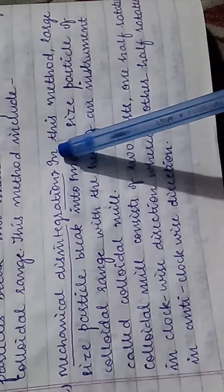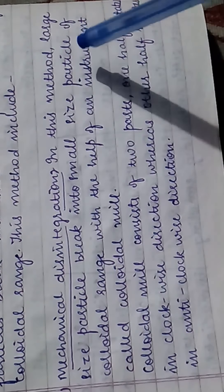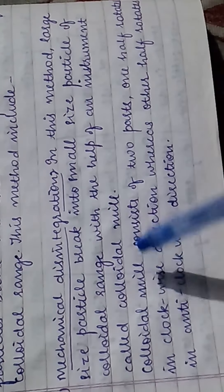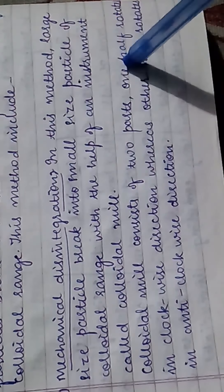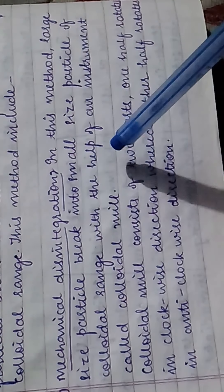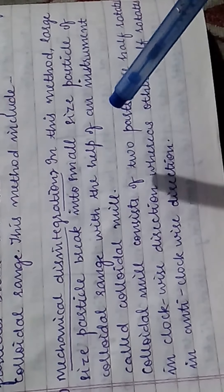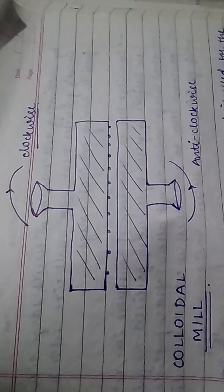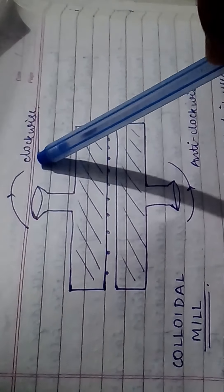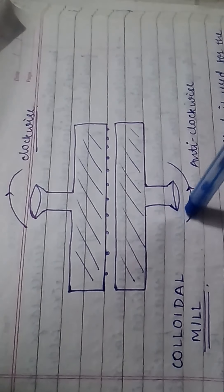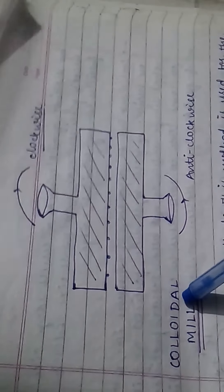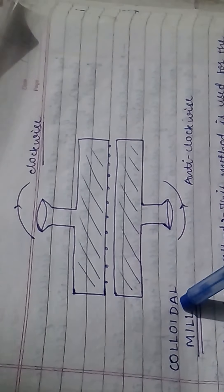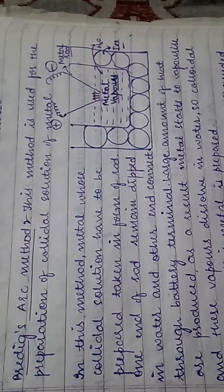First, we have mechanical disintegration. In this method, large-size particles break into small particles with the help of an instrument called a colloidal mill. The colloidal mill has two parts: one rotates in a clockwise direction and the other in an anti-clockwise direction.